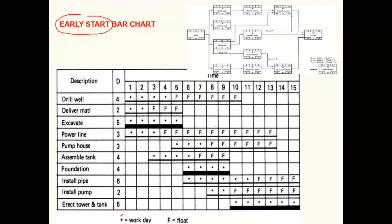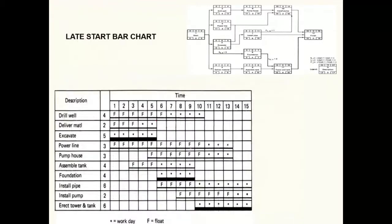Alternatively, the project manager could use a late start strategy, where the float is used earlier and work takes place towards the end of the project. This becomes very risky — if anything goes wrong in week nine there is no float to absorb the impact, and the overall project duration would increase. So utilizing float up front and doing work later is not a clever strategy. These represent the two extremes: early start and late start timings.